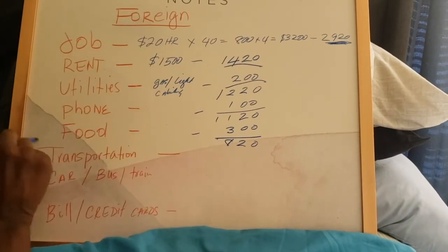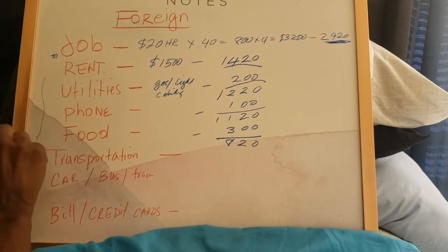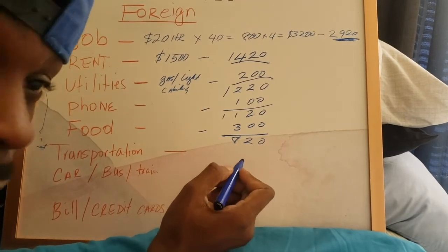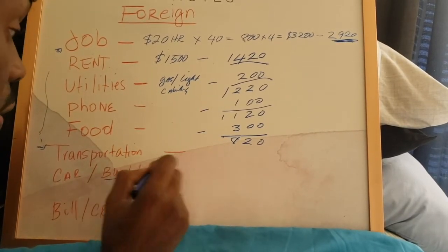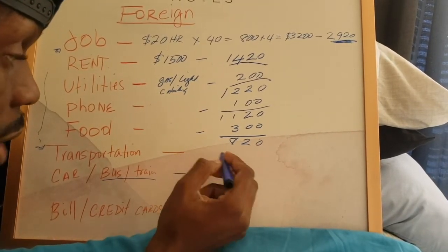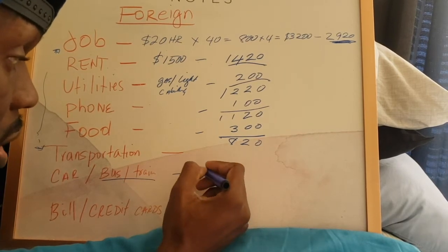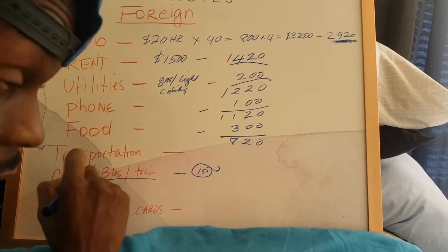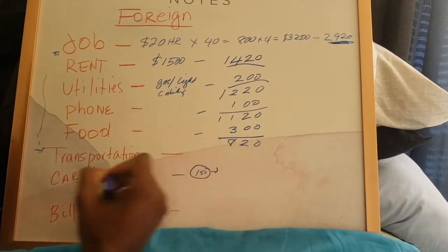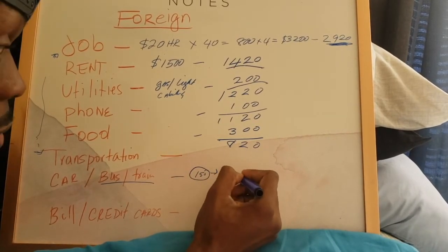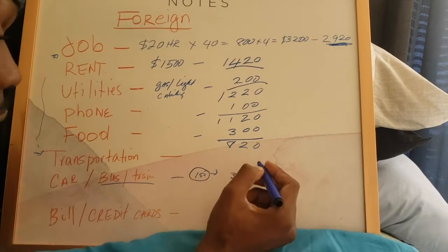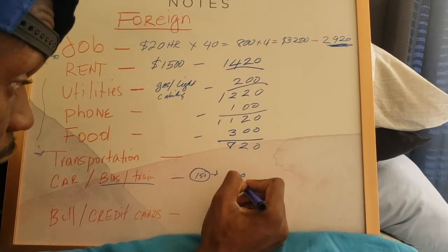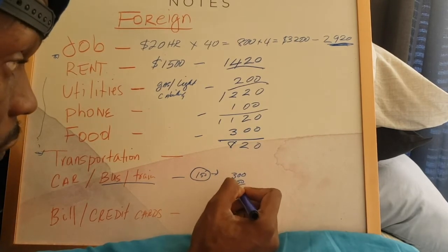Now you have to get back and forth to your job, and other places or wherever. So you need transportation. Transportation comes with this: bus or train, you can take it. You can get probably like a monthly pass for about like $150. Or if you have a car like me, you have car note, which is extra three bills. Then you have car insurance, which is another $150. That's $450.